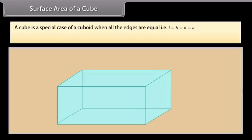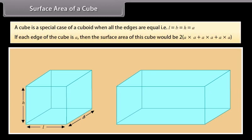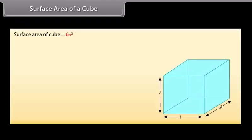A cube is a special case of a cuboid when all the edges are equal, that is L = B = H. If each edge of the cube is A, then the surface area of the cube is 2(A×A + A×A + A×A), which simplifies to 6A².